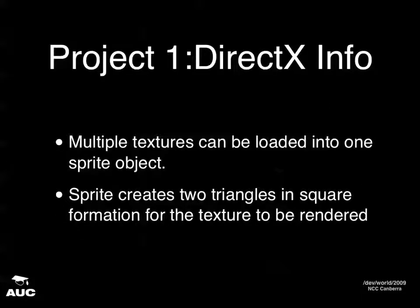The sprite object — there only really needs to be one per project. Multiple textures can be pumped into it. The sprite is used to define two triangles in a square formation on the screen. It stores the background color, the location on screen where you want to paste the texture, and the region of the texture to draw.